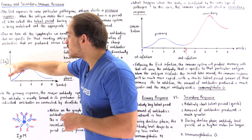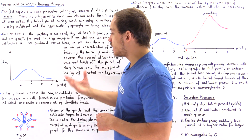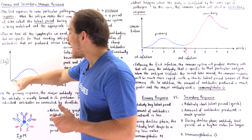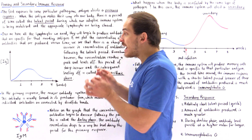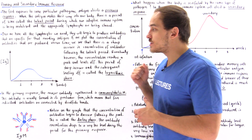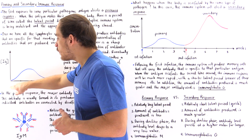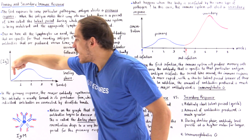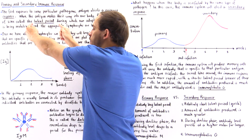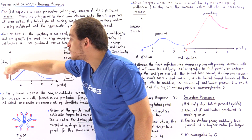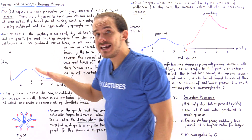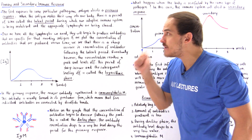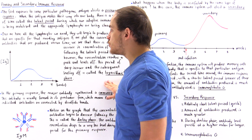The y-axis is the concentration of our antibodies — our immunoglobulins — and the x-axis is the time given in weeks. At week zero, the pathogen invades our body and infection takes place. Since it's the first time we're infected by that particular pathogenic antigen, during the latent period we're going to have a zero concentration of antibody in our blood, because we don't yet have those antibodies that can bind specifically to that infecting antigen.